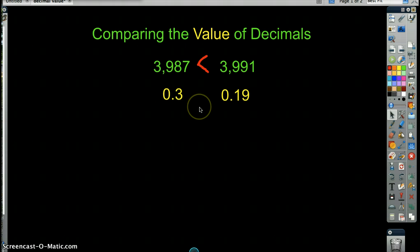So, these numbers are both less than one whole, but not quite zero. So, we're trying to figure out which is greater. Is 3 tenths greater than 19 hundredths? Or is 19 hundredths greater than 3 tenths? How the heck are we going to find out?